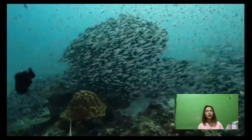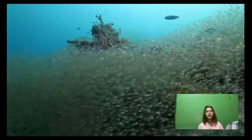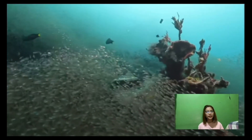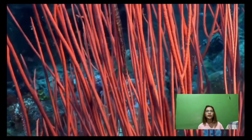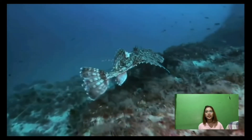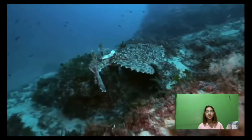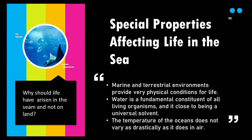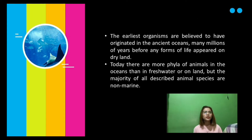The dominant feature of our planet is obviously the vast expanse of blue water, or what we call the ocean. There are factors that affect marine life and how animals thrive in the ocean. Marine and terrestrial environments provide very different physical conditions for life. Water is a fundamental constituent of living organisms and is close to being the universal solvent. The temperature of the ocean does not vary as drastically as it does in air, and the earliest organisms are believed to have originated in the ancient oceans many millions of years before any forms of life appeared on dry land.